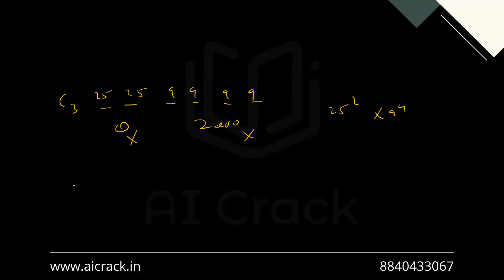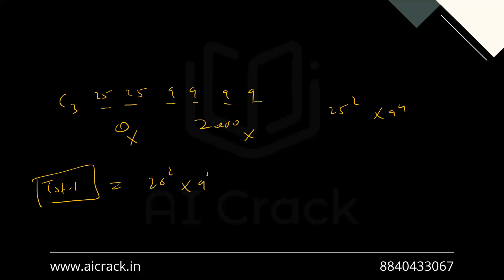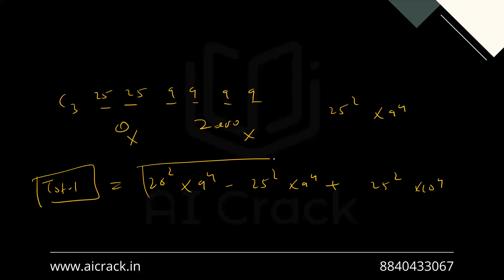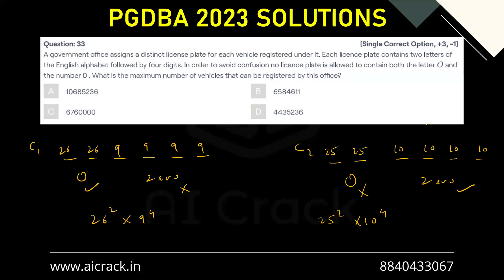So the total number of possibilities is: 26 squared into 9 to the power 4, minus 25 squared into 9 to the power 4, plus 25 squared into 10 to the power 4. If you calculate this, you'll be getting B as the correct answer.